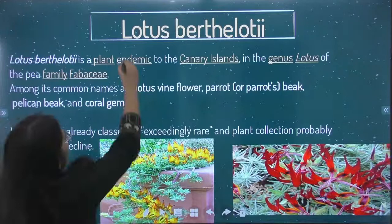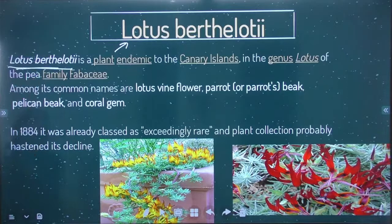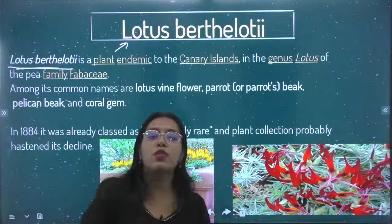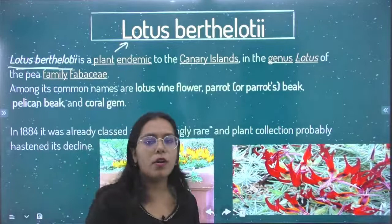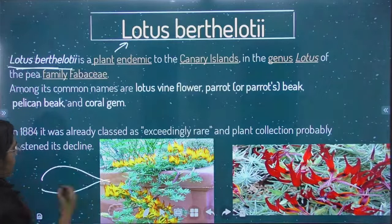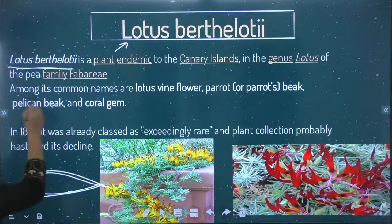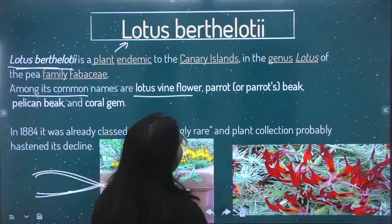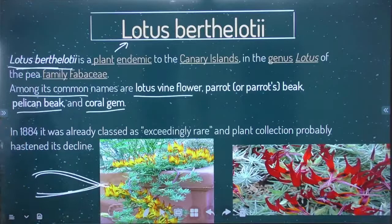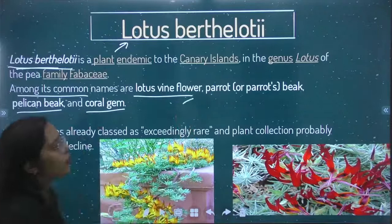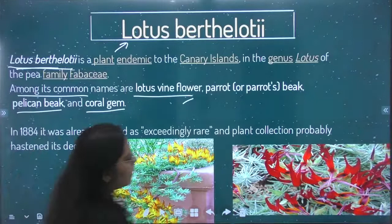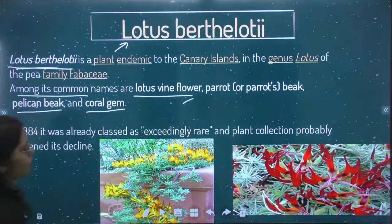Next is the lotus — Berthé Loti. This is an ornamental plant. It was placed in the category where royal ladies used to carry it; it was among the royal flowers and common people did not use it. It has a beak like a parrot. Among its common names are lotus wine flower, parrot and parrot beak, pelican beak, and coral gem. It is known by these three or four names, but these are all now extinct and no longer found.